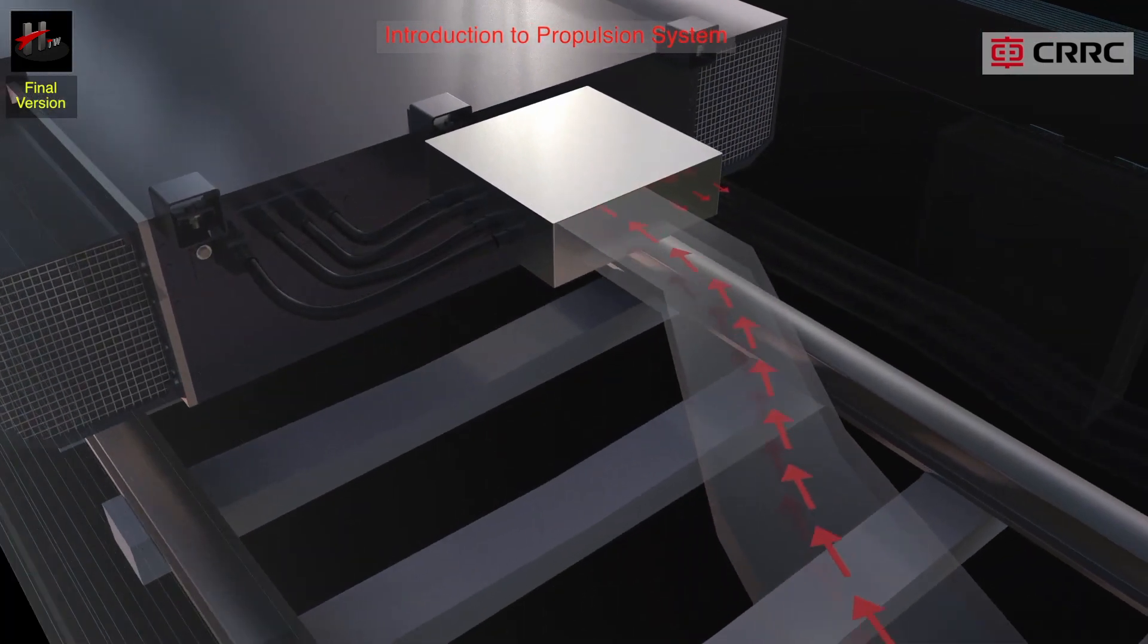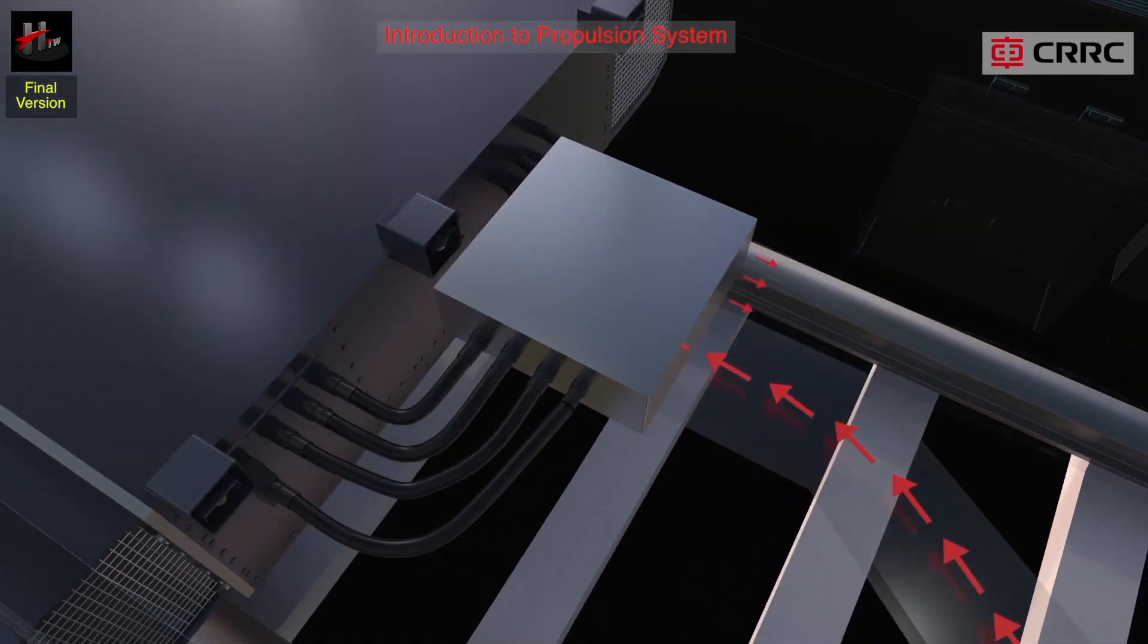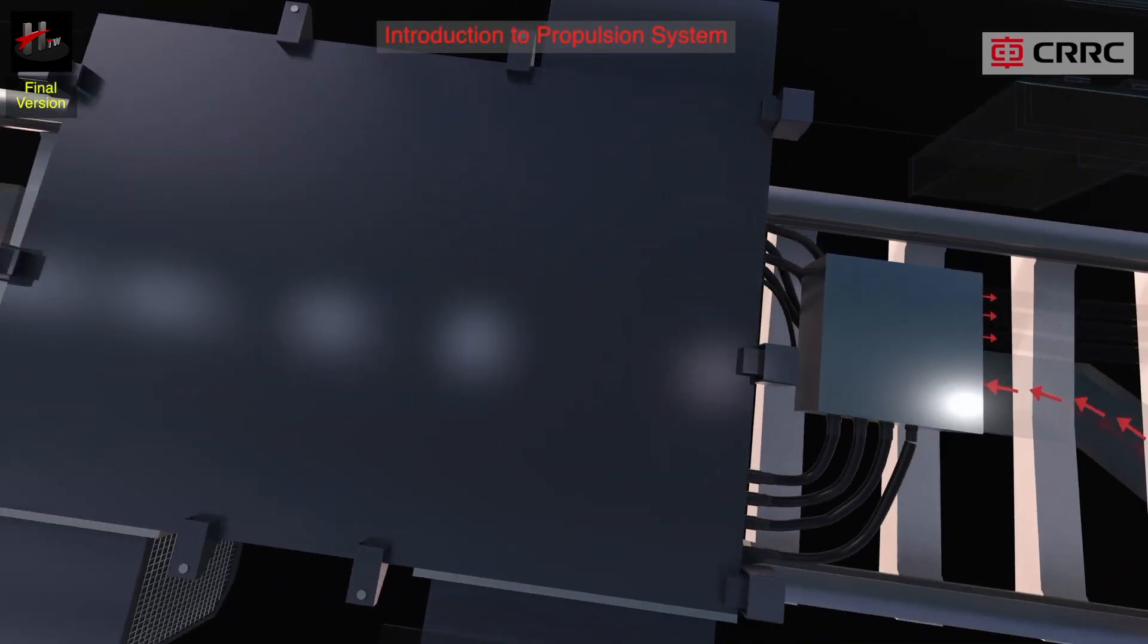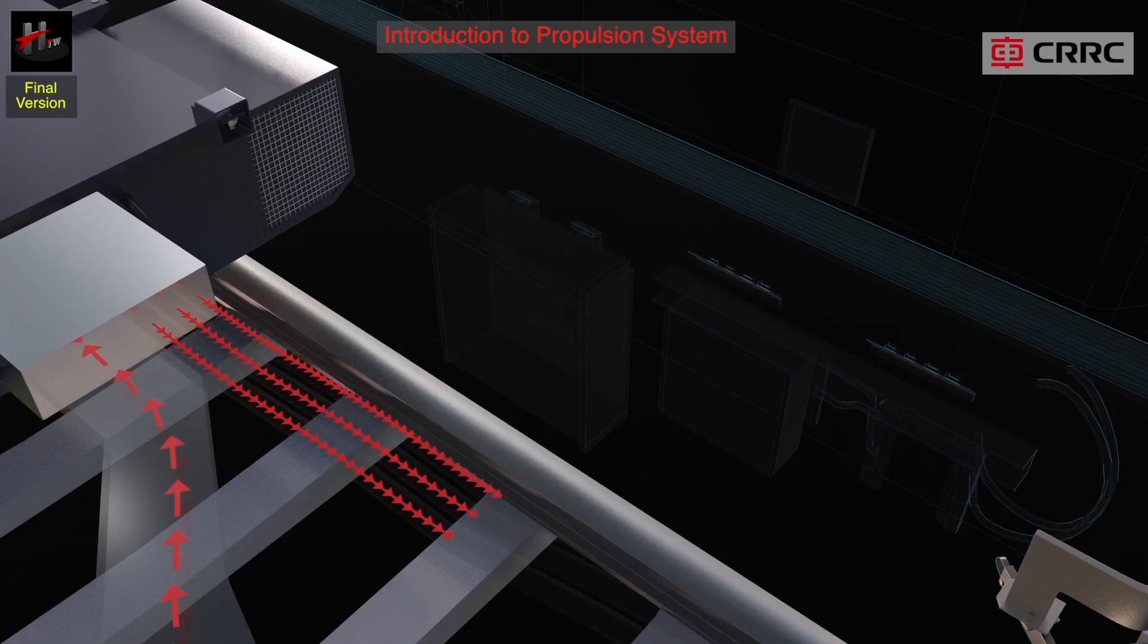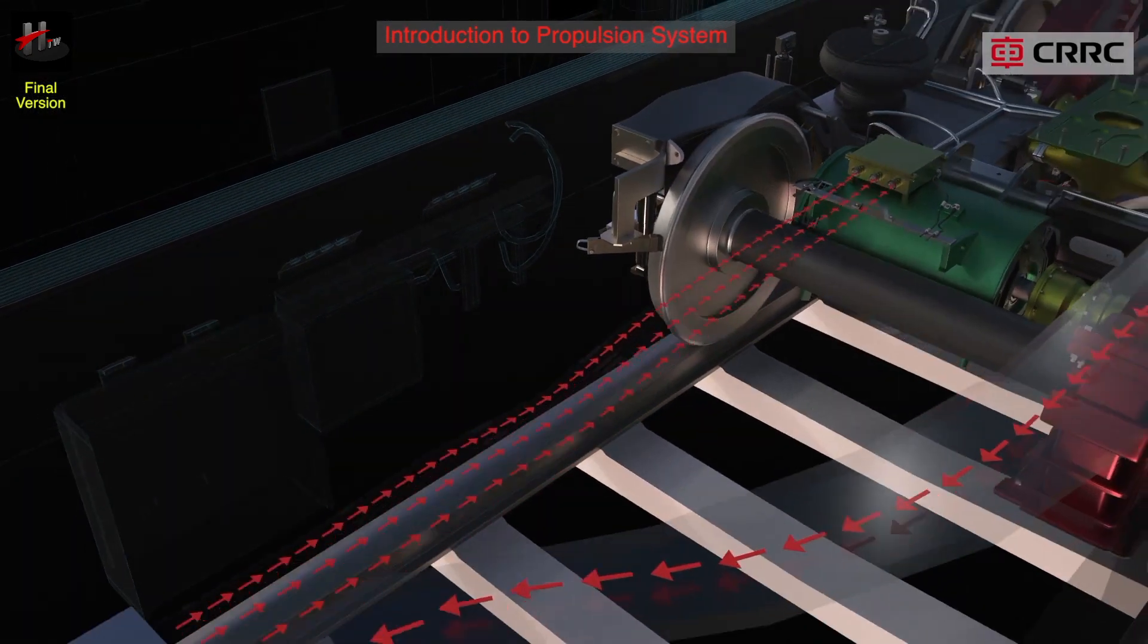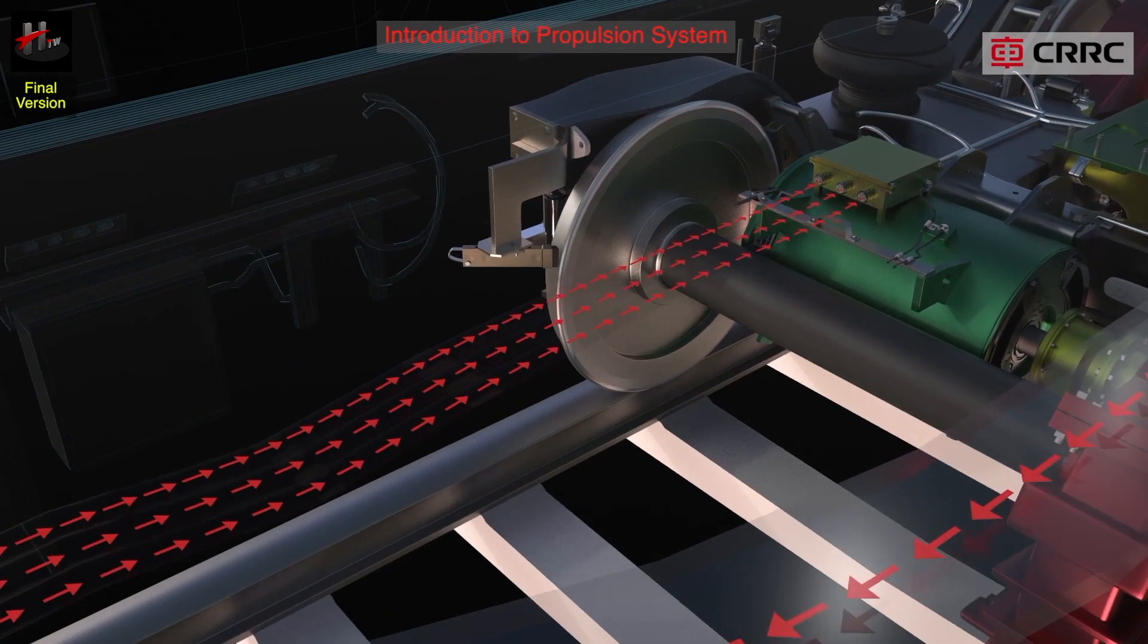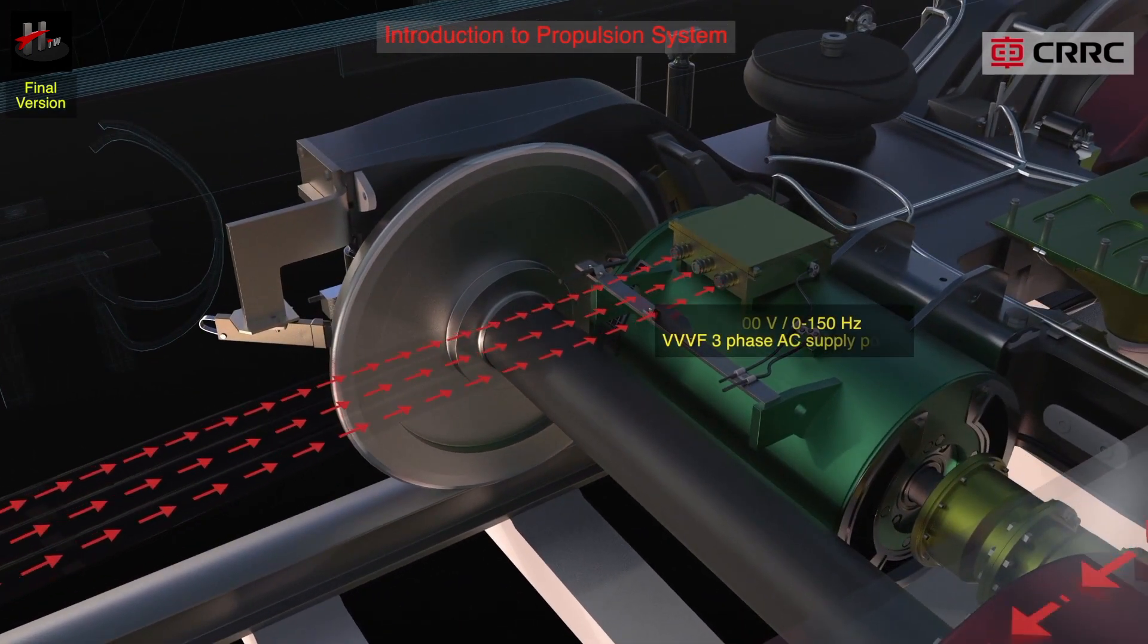The inverter unit converts this DC power to 0 to 1400V, 0 to 150Hz, VVVF. That is, variable voltage, variable frequency, 3 phase AC supply power, and feeds it to the traction motors of the car for the desired motoring and braking demands generated by the train operator.